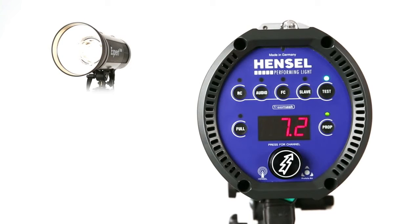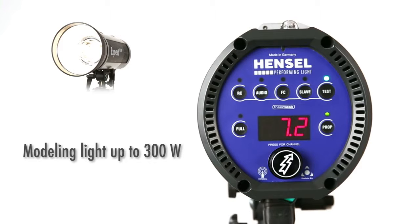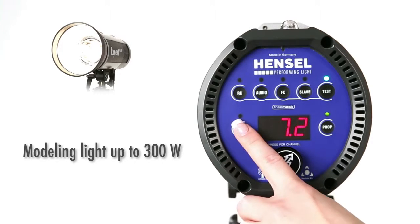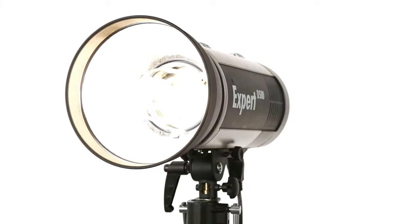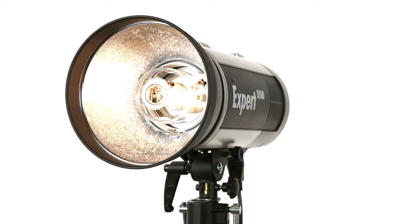The modeling light can be switched independently. Its brightness is adjusted proportionally to flash power or can remain at maximum output, regardless of flash power setting. The modeling light is automatically dimmed when the Expert D is not in use for less heat development, extended lamp life, and reduced power consumption.